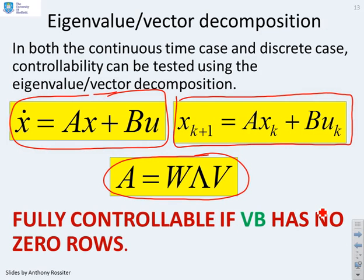And in both cases, we're fully controllable if, and only if, vb has no 0 rows.